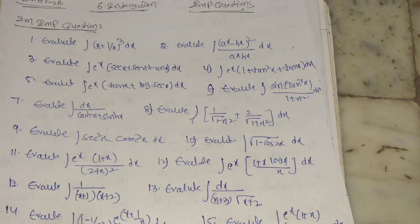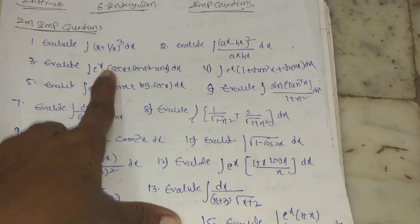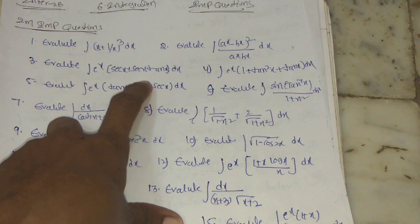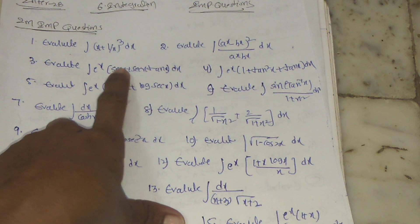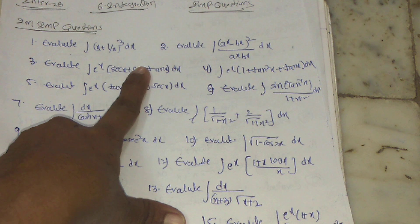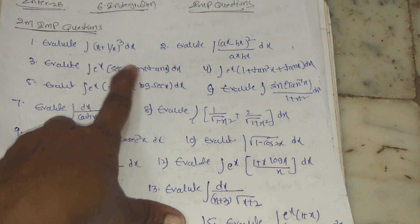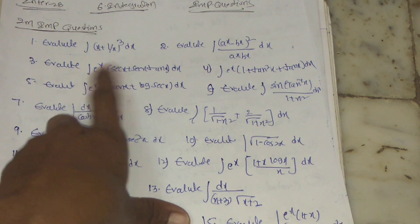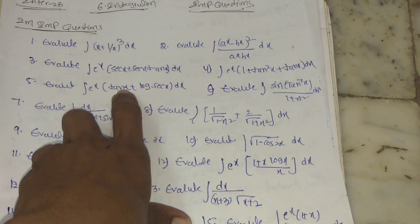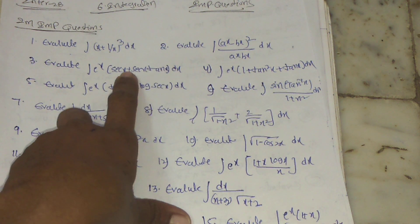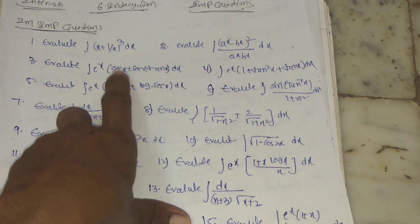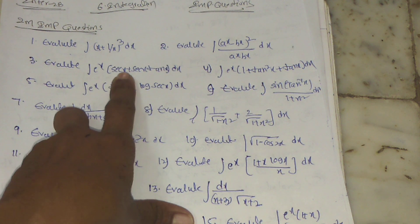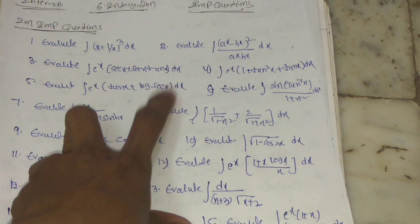Fifth question: evaluate integration of eˣ(tan x + log sec x) dx. The third, fourth, and fifth problems are of the eˣ · f(x) type. The formula is: integration of eˣ[f(x) + f'(x)] dx = eˣ · f(x) + C. For example, log sec x differentiates to sec x · tan x, so log sec x is the f(x). These types of problems are very common.